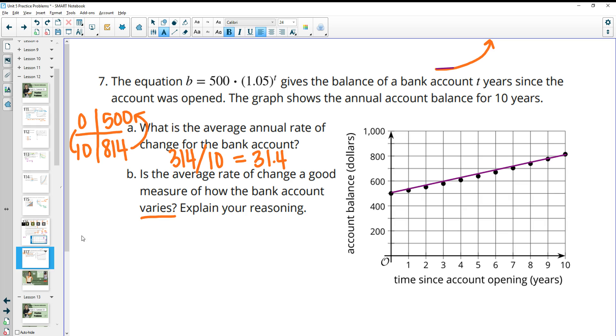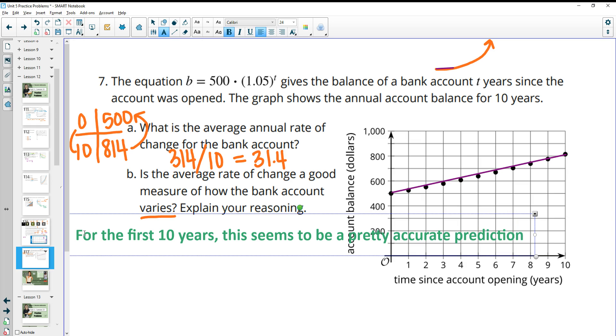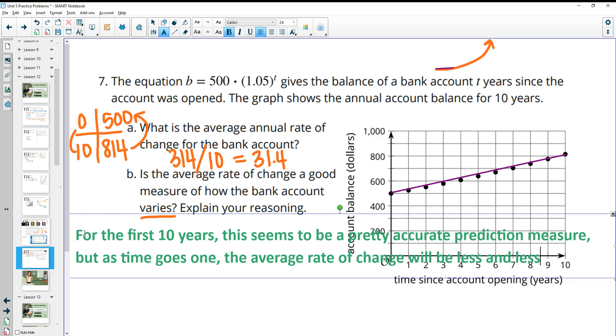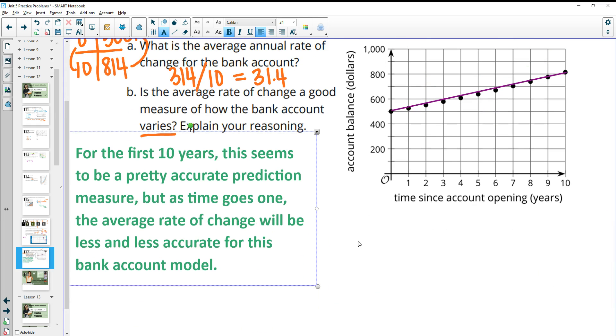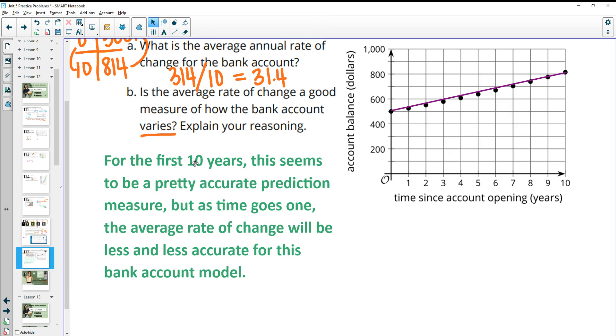And we're not seeing the whole graph. So I would say for this one, for the first 10 years, this seems to be a pretty accurate prediction measure. But as time goes on, the average rate of change will be less and less accurate for this bank account model. Anytime you have an exponential, the average rate of change is not going to be a good indicator of the entirety of the graph. It's going to be able to be pretty close for portions of it, but as time goes on and you look at wider portions of the graph over time, it'll be less and less accurate.